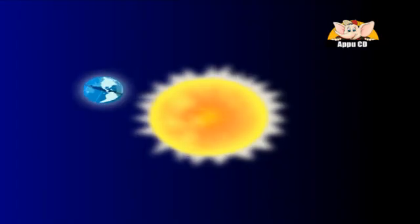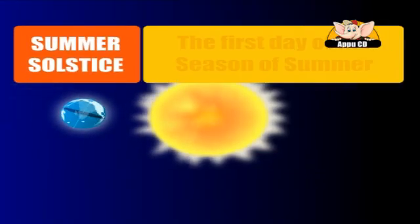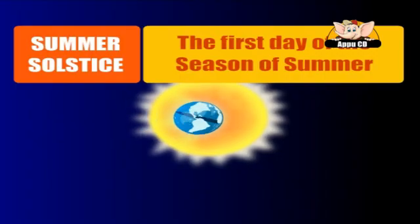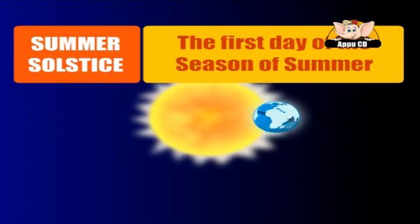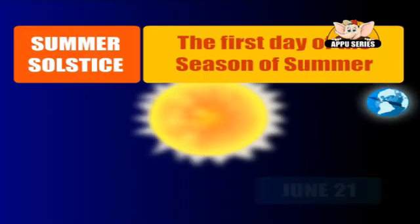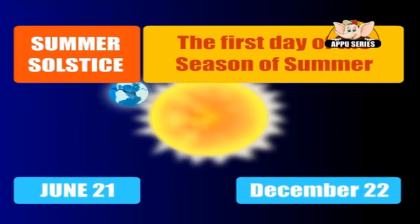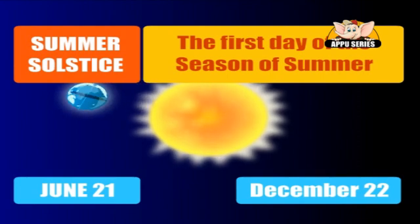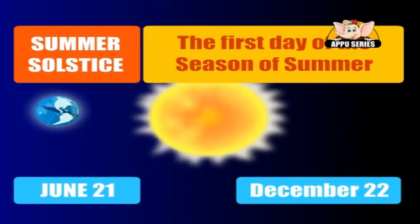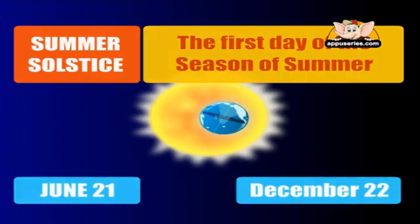Solstice. Summer solstice — the first day of the season of summer. On this day, June 21st in the Northern Hemisphere, the Sun is farthest north and the length of time between sunrise and sunset is the longest of the year.